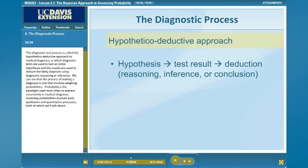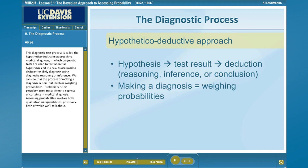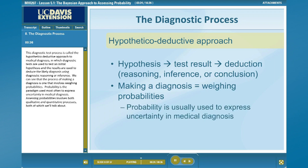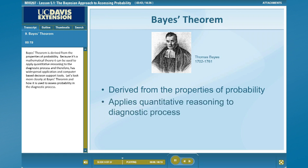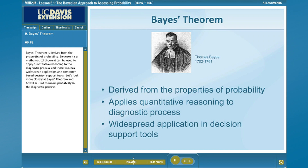We can see that the process of making a diagnosis is one that involves weighing probabilities. Probability is the paradigm used most often to express uncertainty in medical diagnosis. Assessing probabilities involves both qualitative and quantitative processes, both of which we'll talk about. Bayes' theorem is derived from the properties of probability. Because it's a mathematical theory, it can be used to apply quantitative reasoning to the diagnostic process and therefore has widespread application in computer-based decision support tools.